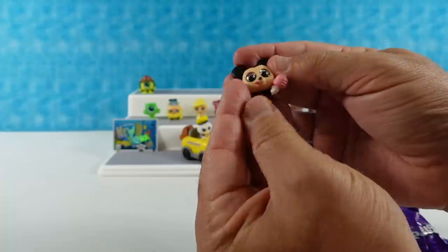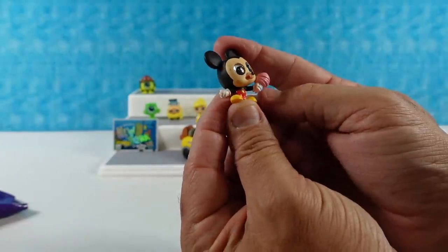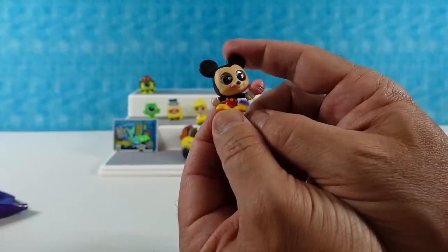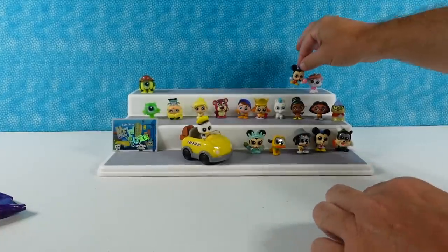Next. I have Mickey Mouse. Mickey has a cotton candy. He's in the state fair. Going to the amusement park. That makes sense. Amusement park Mickey with cotton candy.